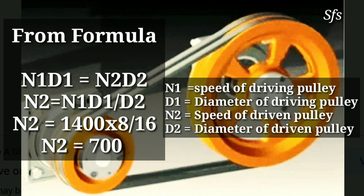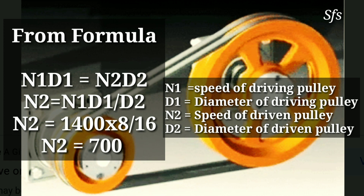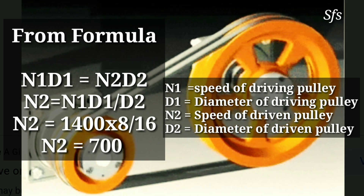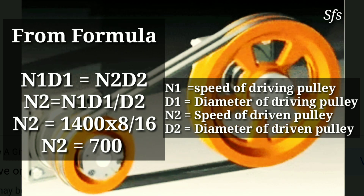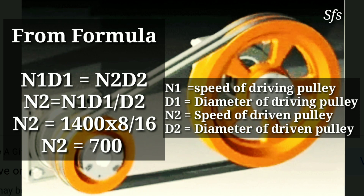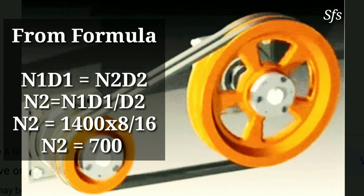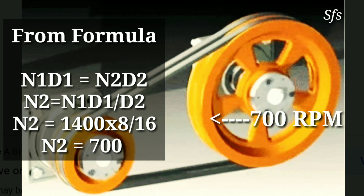From cross multiplication, we get N2 = (N1 × D1) / D2. Putting in all the values: N1 is the speed of the driving pulley, D1 is the diameter of the driving pulley, and D2 is the diameter of the driven pulley. So: N2 = (1400 RPM × 8) / 16. We get N2 = 700 RPM. The speed of the driven pulley is 700 RPM.